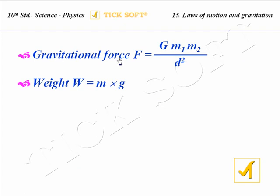Gravitational force F is equal to capital G m1 m2 divided by d square. Here G is the universal gravitational constant. The value of G is 6.673 into 10 power minus 11 Newton meter square kilogram power minus 2. m1 is the mass of one object, m2 is the mass of the other object, and d is the distance between the two objects.